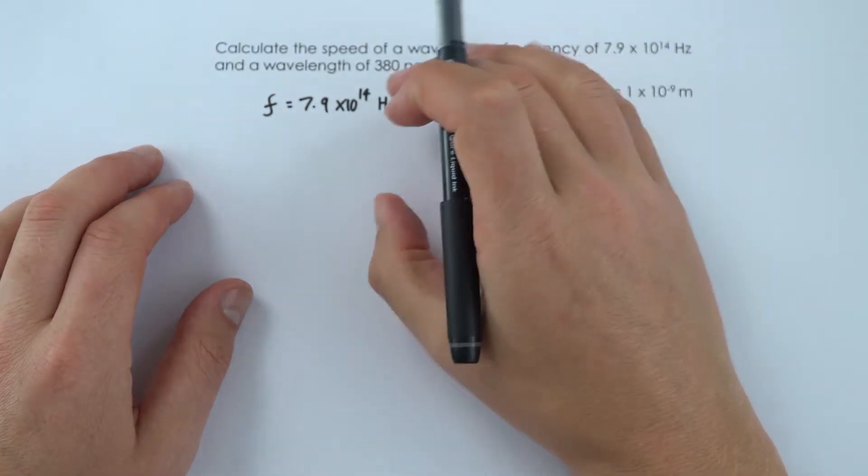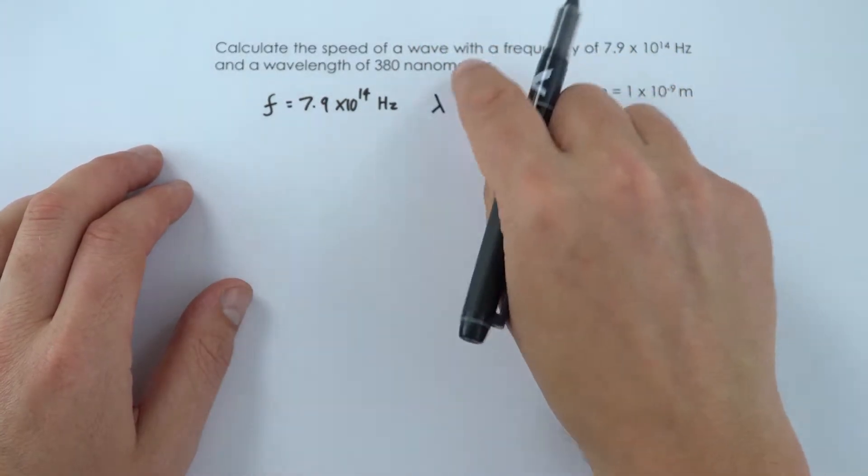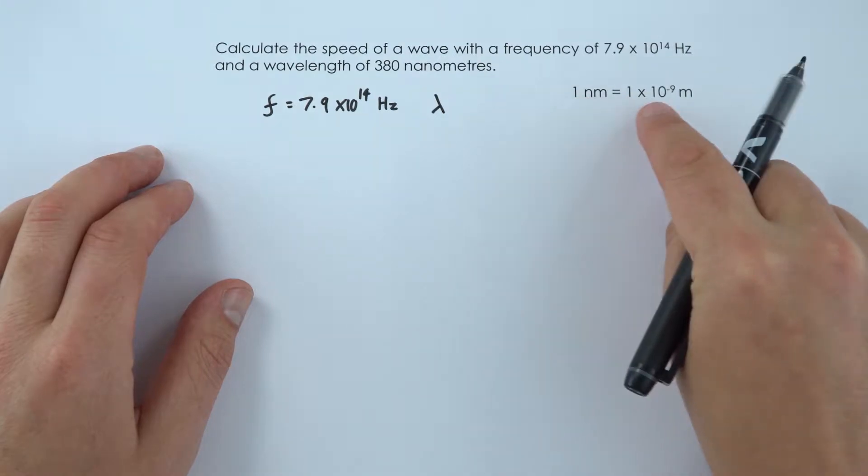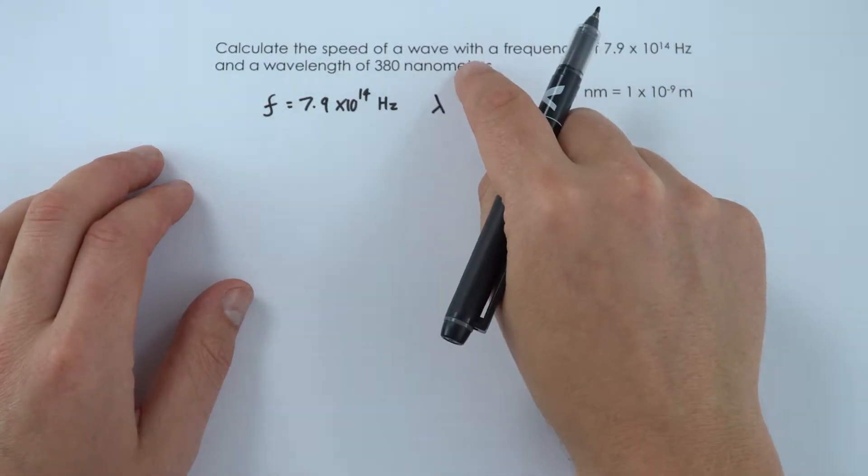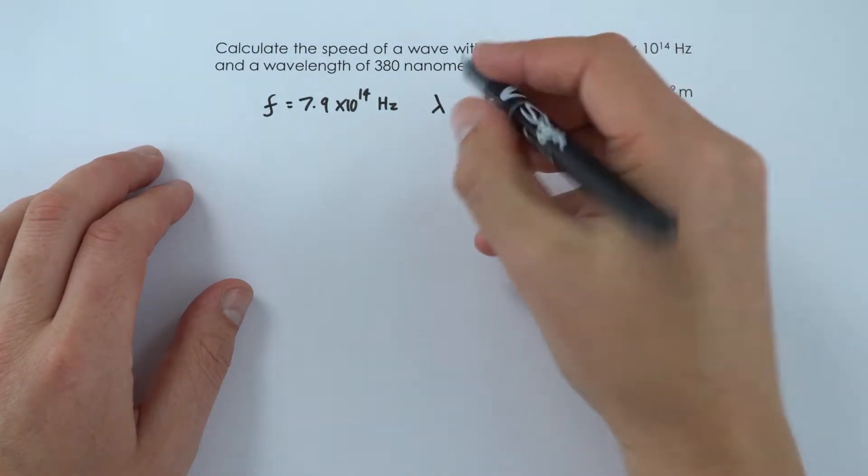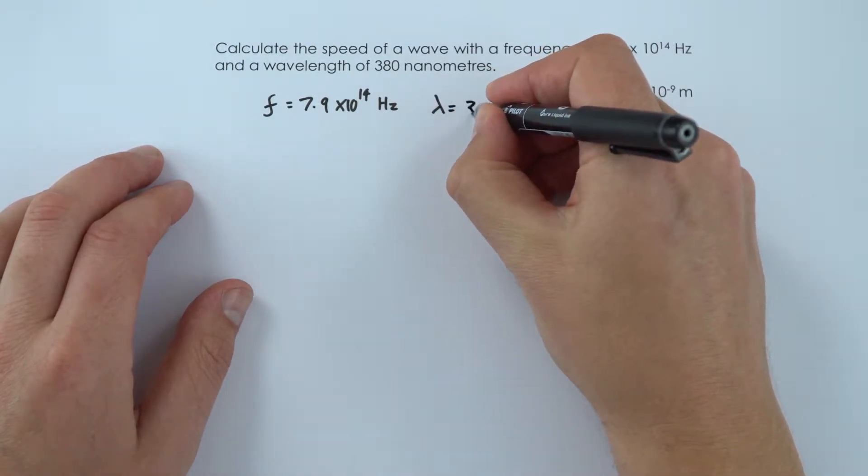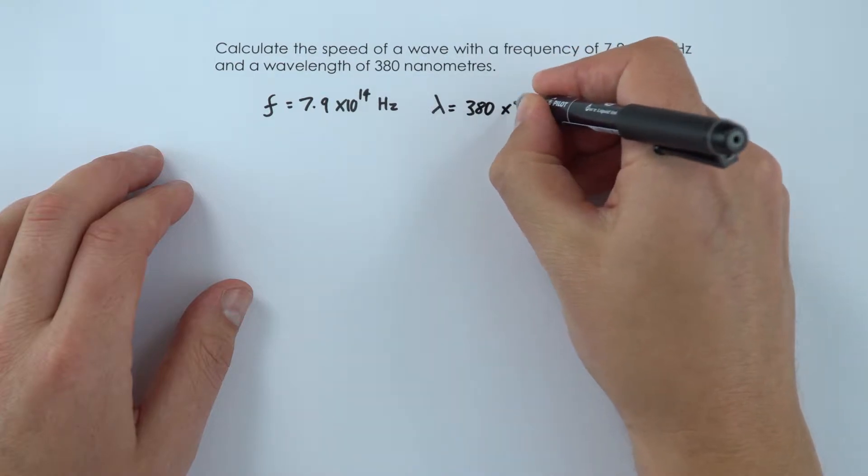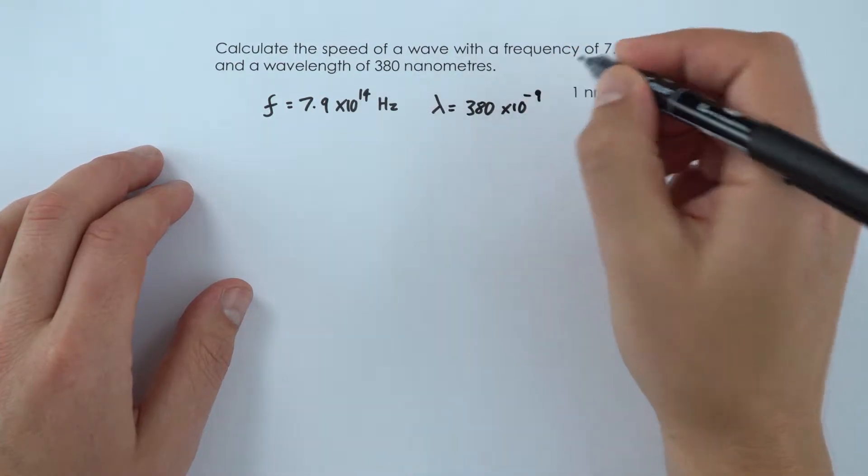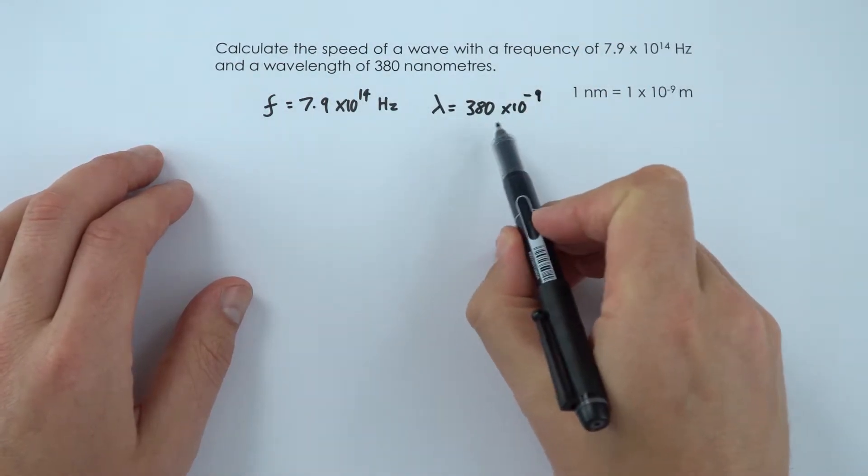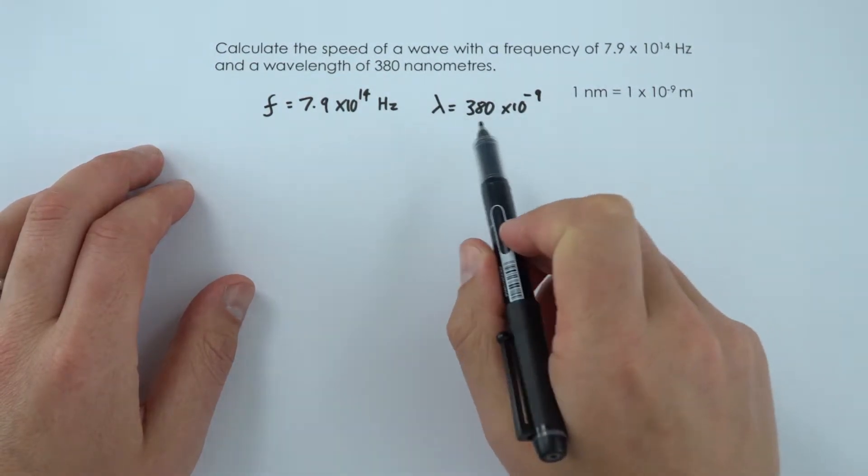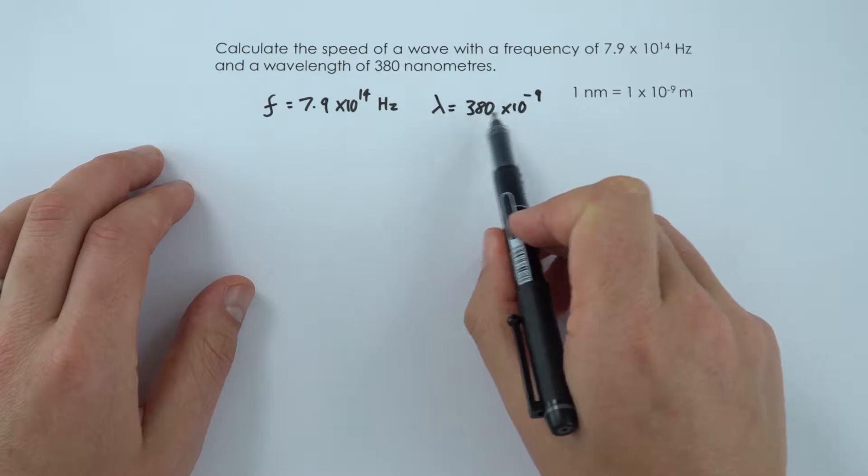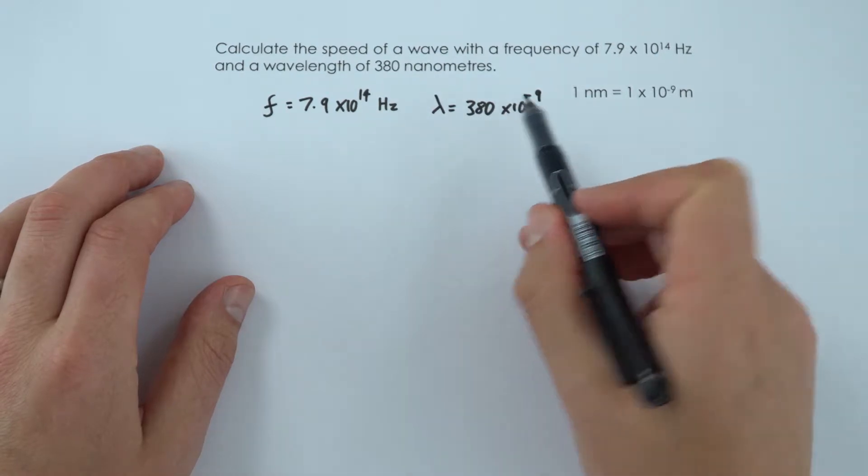Now you don't need to know at GCSE what a nanometre is, and actually in the question it says that 1 nanometre is 1 times 10 to the minus 9 metres. So even though this might be new information, it explains that new information in the question. So the wavelength is going to be equal to 380 times 10 to the minus 9. Now that's not the normal way of writing down standard form, we'd normally put 3.8 times 10 to the something, but that's an acceptable way for when we're going to be entering this data into our calculator.